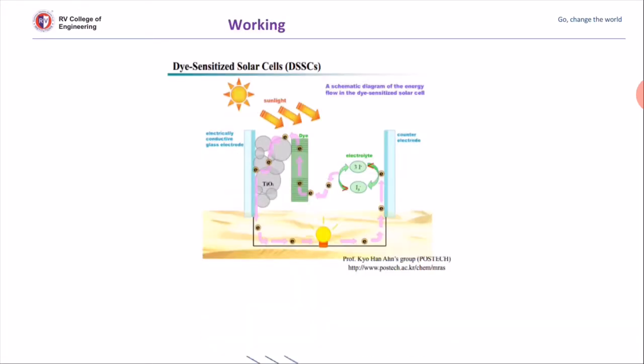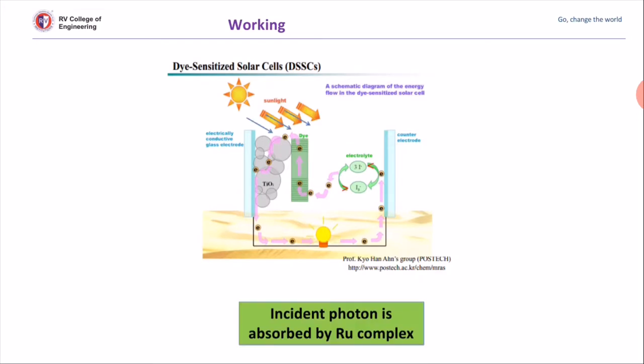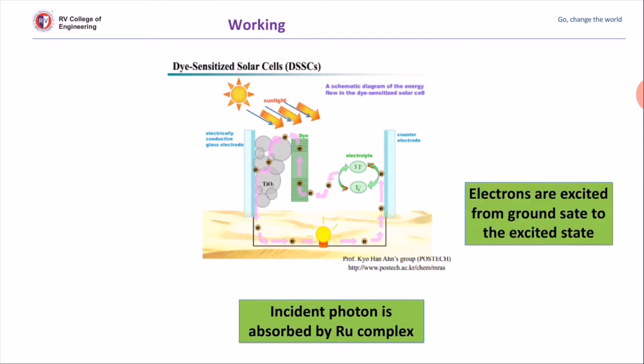In between the two electrodes, triiodide is used, which helps in the electron transfer process. When sunlight falls on the solar cell, it passes through the indium tin oxide layer and reaches the dye molecules. The dye molecules undergo excitation with the liberation of electrons.